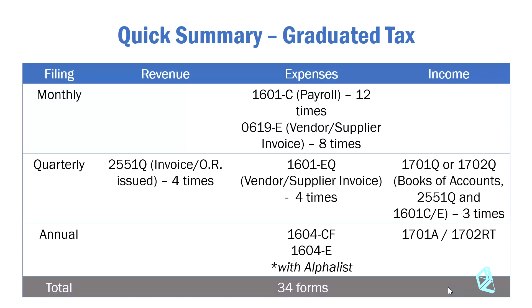For quarterly filing, you have Form 2551Q, and the basis here would be the invoices or official receipts you have issued — that is four times a year. Then there's Form 0601EQ, filed on the third month of the quarter, representing the expanded withholding tax. This is filed four times. So in total, combining 0619E and 0601EQ, that would be 12 filings for expanded withholding taxes.